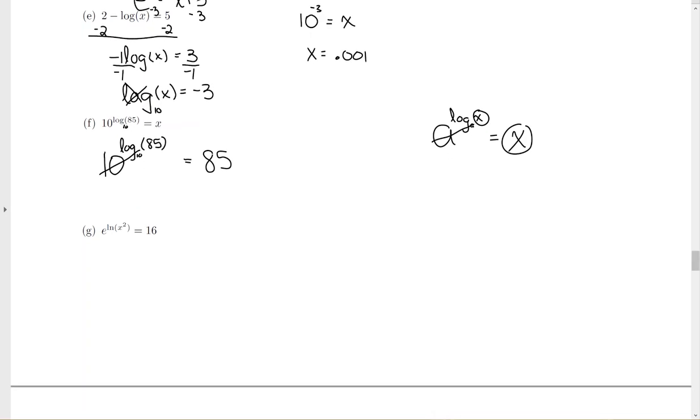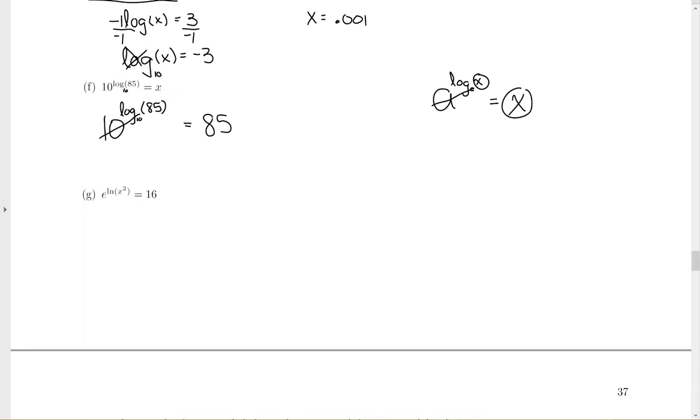And for this last one, same idea. Remember, the ln, natural log, is really log base E of x squared equals 16. Everybody cancels. x squared equals 16. Hit it with a square root, put your plus or minus in. x could be two different values, a positive 4 or a negative 4. Sometimes on WebAssign, they'll ask you to separate it with a comma, so you would just write in 4, negative 4.